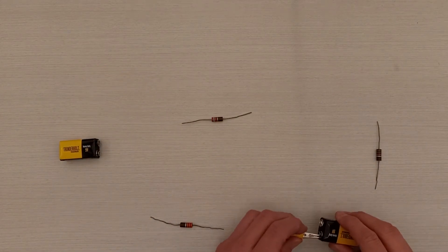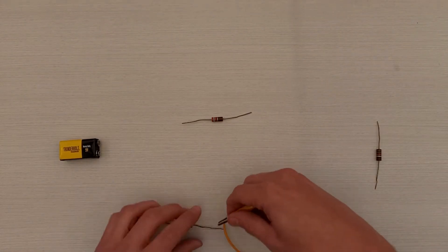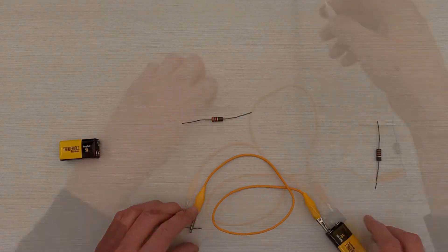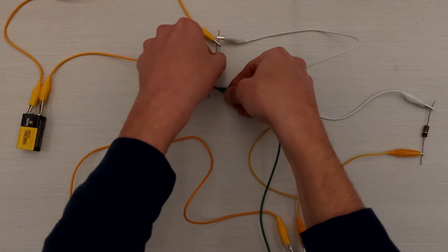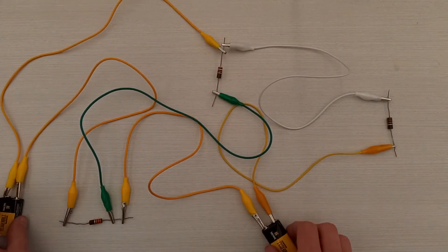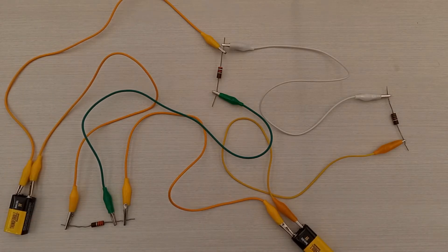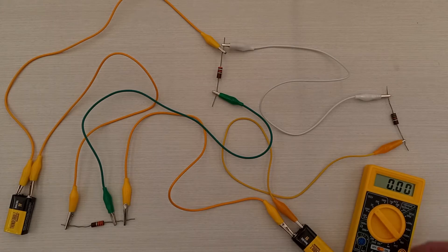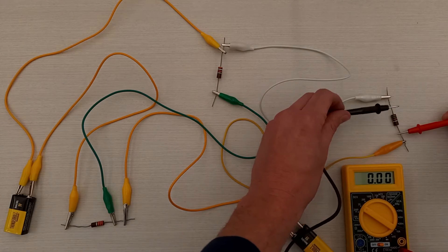Construct the circuit using wires or a breadboard. Once you've constructed the circuit and connected the batteries, you can measure the voltage across each resistor using the multimeter, the same way you did with the battery.